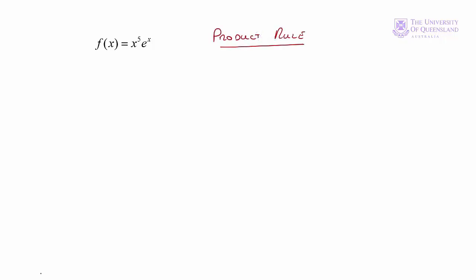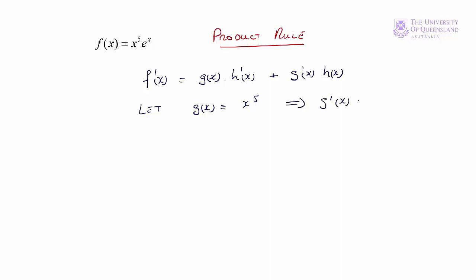Here we have f(x) = x^5 · e^x, so we'll use the product rule. We'll have f'(x) = g(x)·h'(x) + g'(x)·h(x). We'll let g(x) = x^5, which implies g'(x) = 5x^4. And we'll let h(x) = e^x, which implies h'(x) is also equal to e^x.